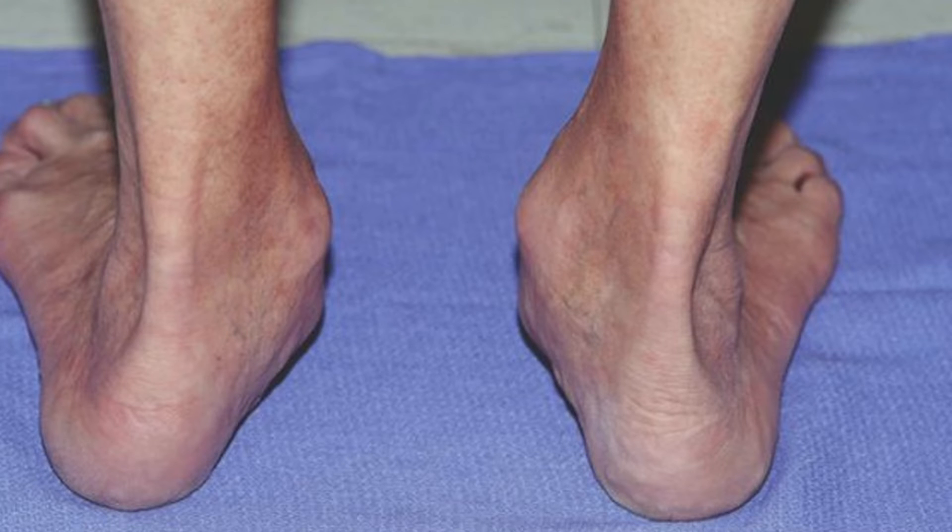The slight difference with posterior tibial tendon dysfunction is that the tendon becomes weaker over time, and that allows the arch of the foot to drop, and in those patients, they start to develop a condition called adult acquired flat foot.